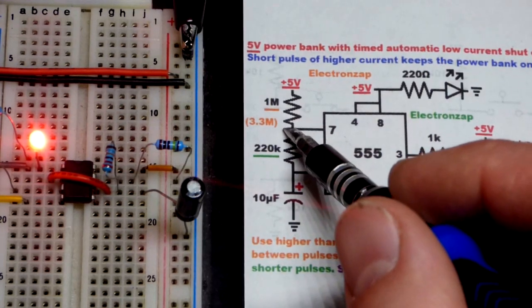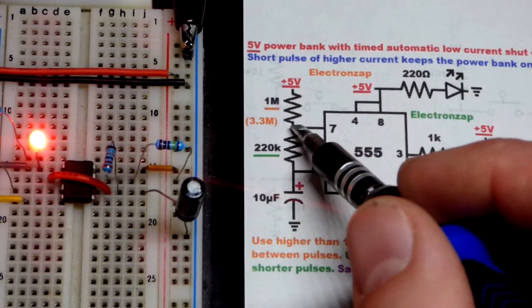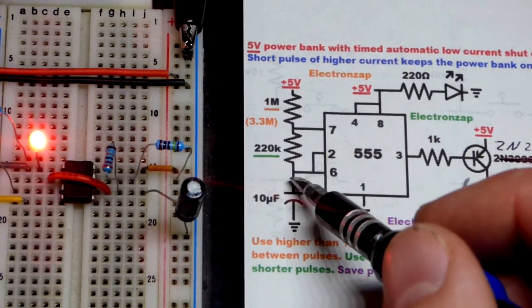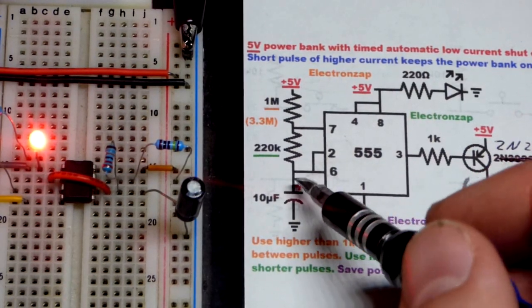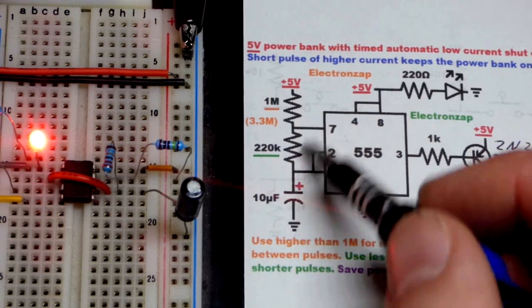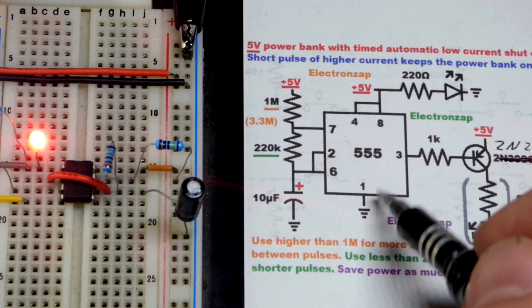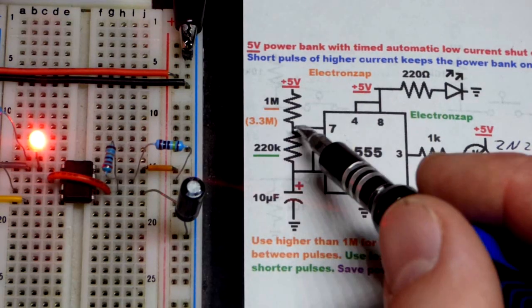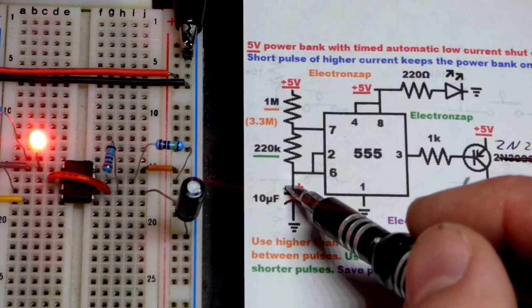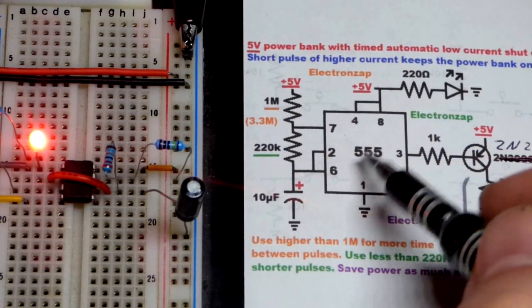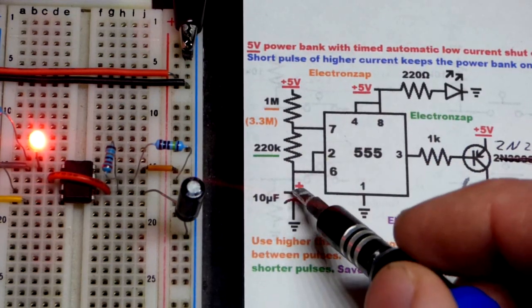That's the charging high, it's off. And then once this gets to 2/3 supply voltage, charge up, then the output goes low as does pin 7. Connects to ground. That's when the transistor turns on and the capacitor starts discharging. So you want it to discharge over whatever period of time is needed to reset the time that the power bank is going to turn off.